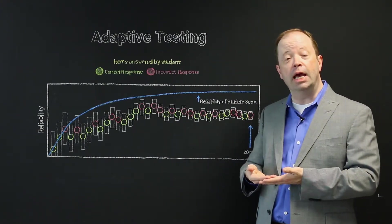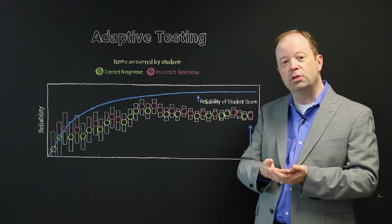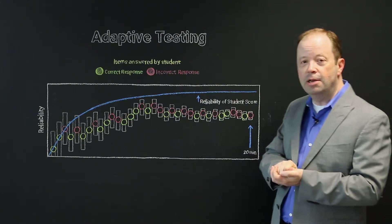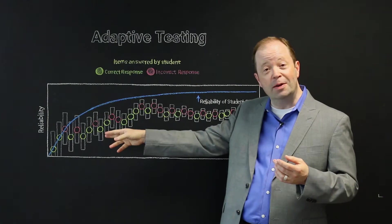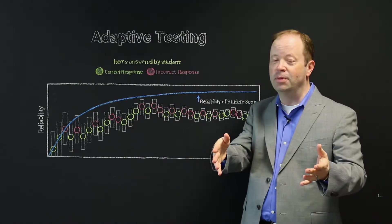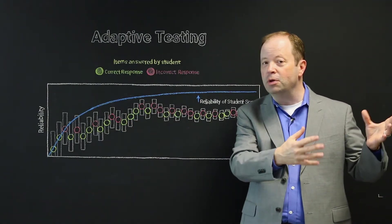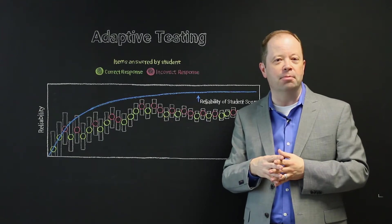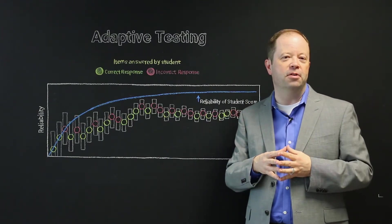They would give a student an item. They would take a look at how they respond to it. And then based on that response, they would choose the next item. And if the answer to the first item was correct, you'd probably get a harder item. And when you get to those items that you don't get correct, you start getting easier items.